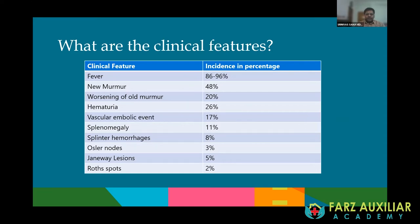The overwhelming feature of endocarditis is fever. The classical teaching is that a patient with fever, a new murmur, and splenomegaly should always be investigated exhaustively to exclude endocarditis. The commonest feature is fever followed by a new murmur. If there has been an old murmur like an aortic regurgitation or mitral regurgitation murmur, and the intensity of the murmur has changed, then worsening of an old murmur is also a clinical feature of new endocarditis.